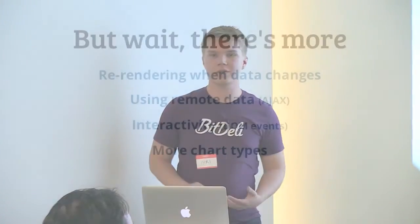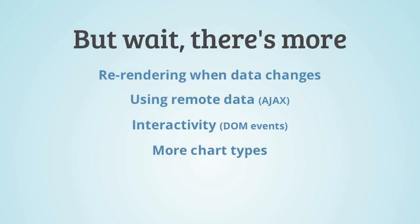And of course, there's more. We could do re-rendering based on changing data as Miles' example had. We could get the data from a remote place. We could have interactivity. And we could handle DOM events inside the SVG. And that's all that can be bound with the Backbone API. So there's a lot of interesting stuff that could be done. And of course, more chart types. Everybody loves more chart types.